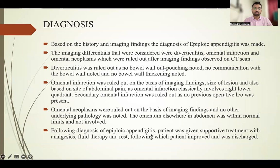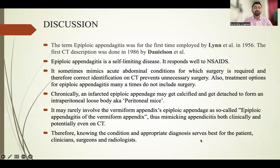After the diagnosis of epiploic appendicitis was made, the patient was given supportive treatment with analgesics and fluid therapy and rest, following which the patient improved and was discharged. The term epiploic appendicitis was first employed by Lyme in 1956, and the first study description was done in 1986 by Danielson. Epiploic appendicitis is a self-limiting disease that responds well to analgesics. It sometimes mimics acute abdominal conditions requiring surgery; therefore, correct identification on CT prevents unnecessary surgery. Chronically, an infarcted epiploic appendage may get calcified and detach to form an intraperitoneal loose body, also called peritoneal mice.